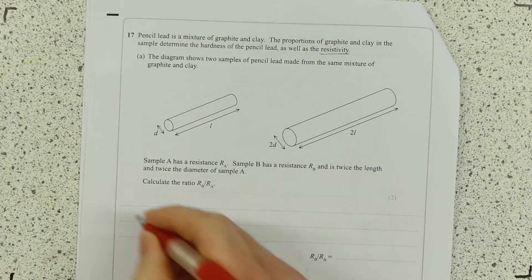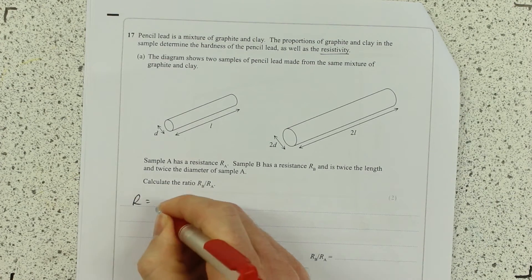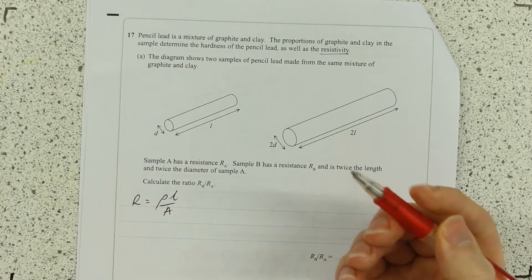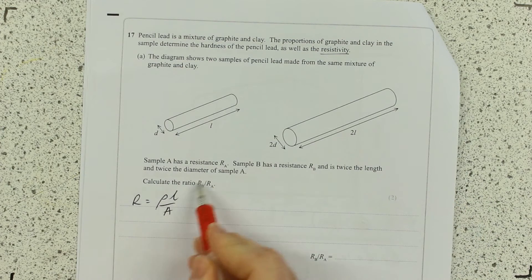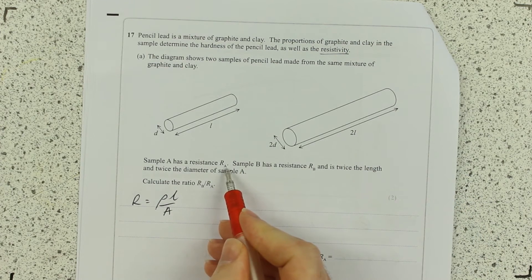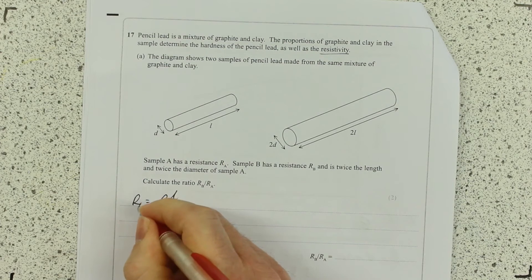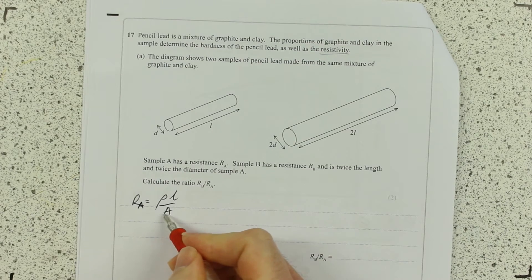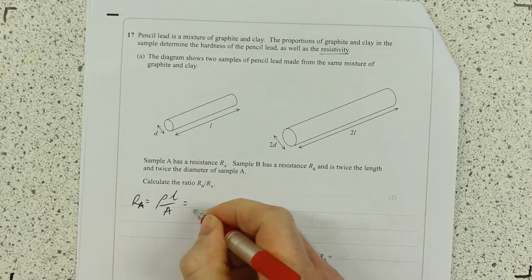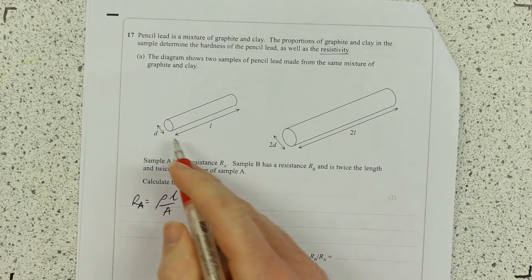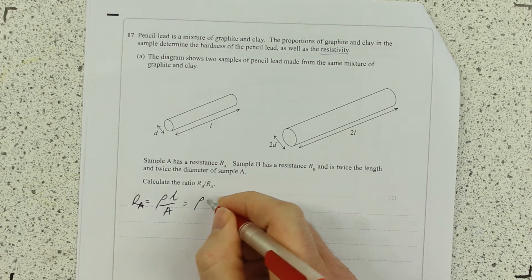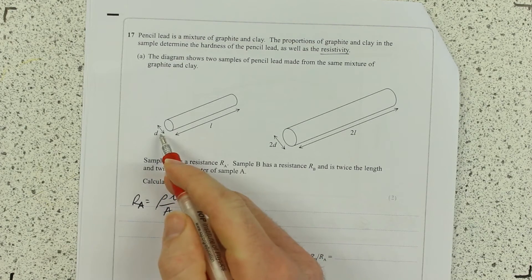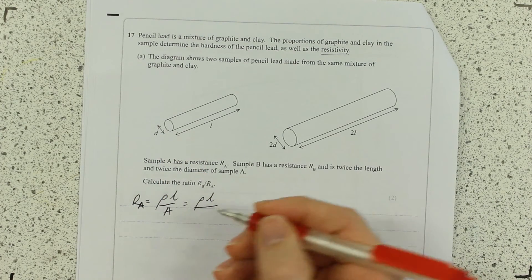So resistivity is linked to resistance by this equation here. Resistivity being rho, R being there. So let's write an equation for the resistance of RA. And I'm going to actually simplify that because I've not got A here, I have D. And A is related to D by π R squared.